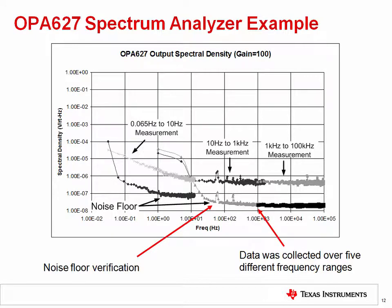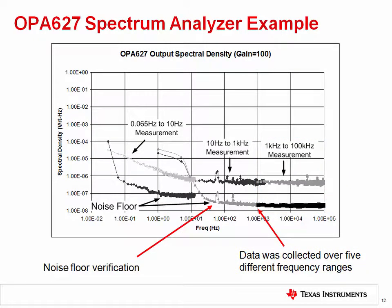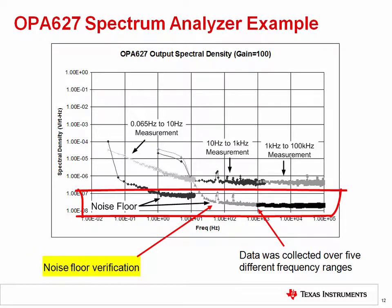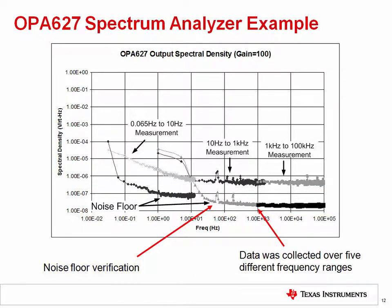Here we show the spectral density curve results using the circuit from the previous slide. Data was collected over several frequency ranges, with the spectrum analyzer's measurement bandwidth adjusted for each range to optimize accuracy — very narrow at low frequencies and wider at high frequencies — to achieve good accuracy while keeping measurement time reasonable. The system noise floor was also measured, which is important regardless of test equipment used. Remember, if the noise floor is higher than the signal you are trying to measure, you cannot get a valid result.